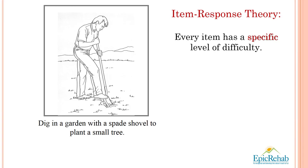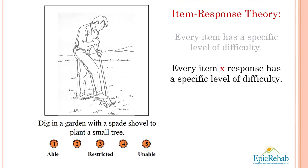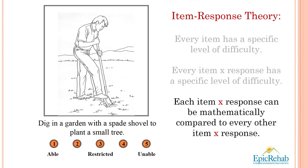We've been able to collect so much data that we can break down the difficulty level in terms of slightly different scores for men and for women and slightly different scores across the age span. The second idea in item response theory is that the relationship between every item and every response in the rating scale has a specific level of difficulty. If we have a five-level rating scale from able to unable, each of the responses has a specific level of difficulty attached to it.